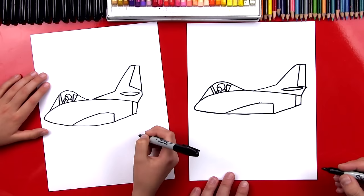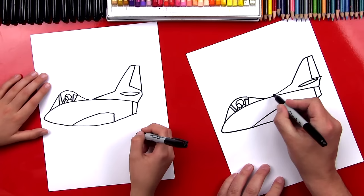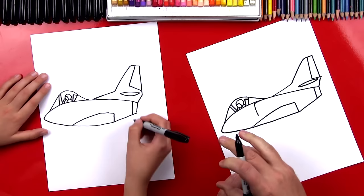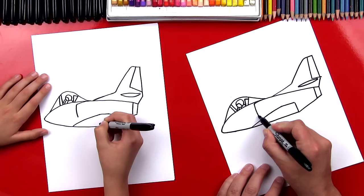There we go, good job. Okay, now let's draw the side part to the body, to the fuselage. So this I believe is where the engine is and where air comes into the engine. So I drew a little line that comes down and then we're going to connect it back to the wing.